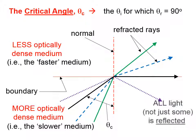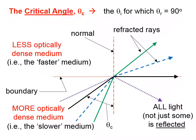Any angle of incidence beyond the critical angle means all the light — not just some of it — is completely reflected and is unable to escape into the faster medium.